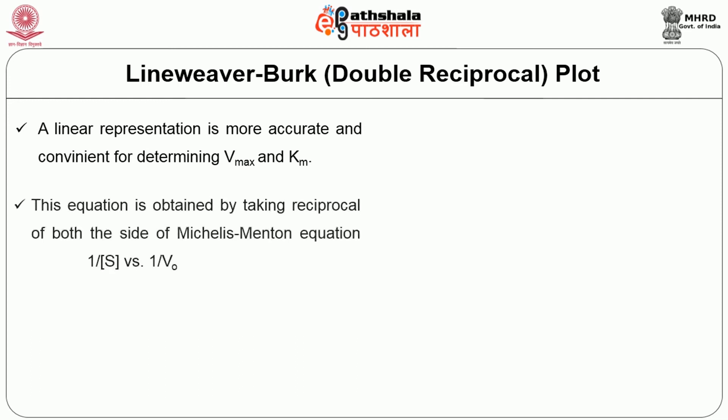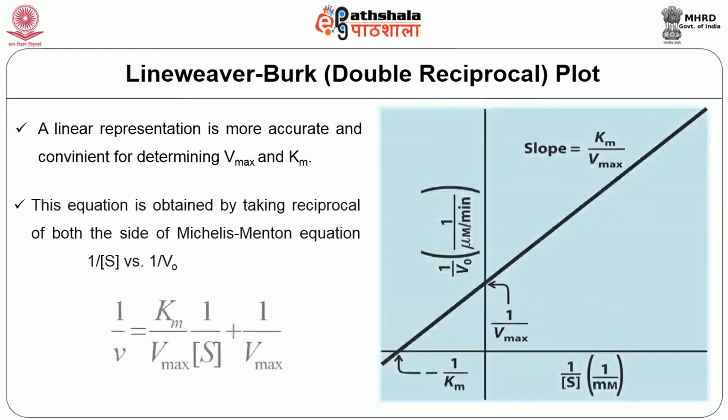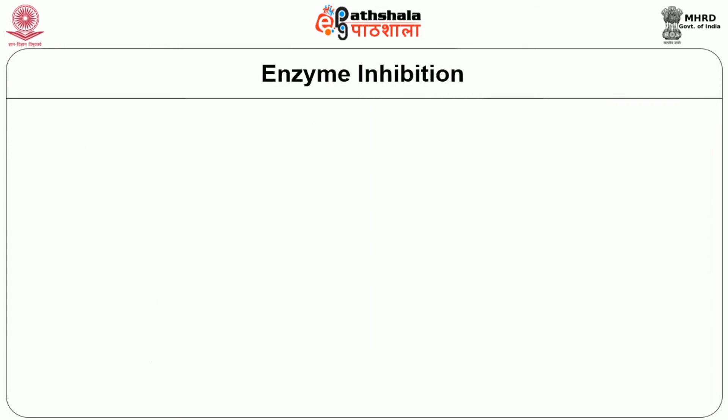This linearization is obtained by taking the reciprocal of both sides of the Michaelis-Menten equation, plotting 1/[S] versus 1/V0 — also called the double reciprocal or Lineweaver-Burk plot. The y-intercept gives 1/Vmax, the slope is Km/Vmax, and the x-intercept is -1/Km, allowing calculation of Km for a particular substrate with a given enzyme.